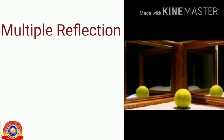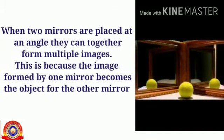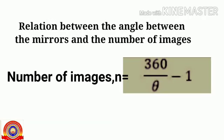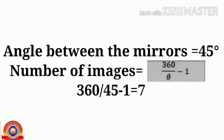Next, multiple reflection. When two mirrors are placed at an angle, they can together form multiple images. This is because the image formed by one mirror becomes the object for the other mirror. The number of images formed is calculated using the formula: 360 divided by theta, minus 1, where theta is the angle between the mirrors.